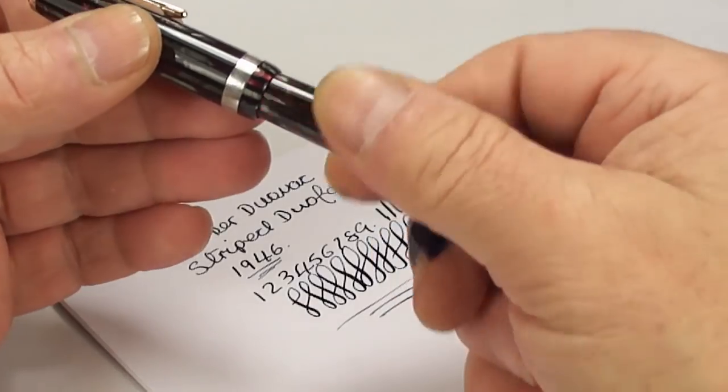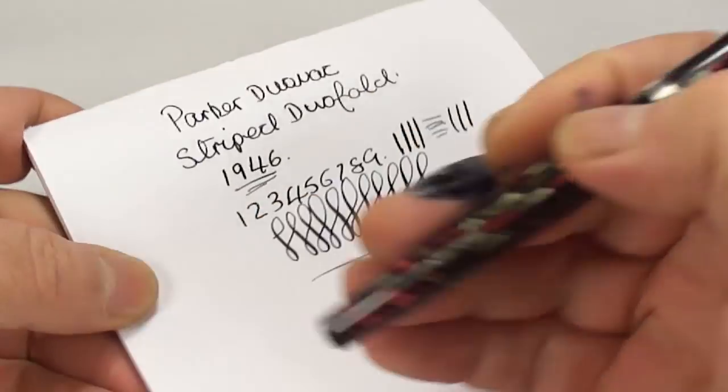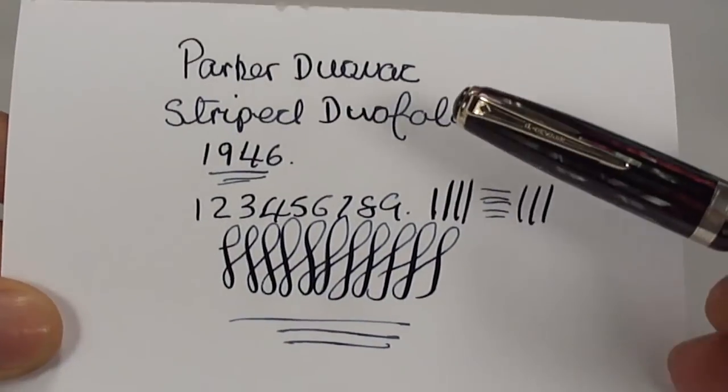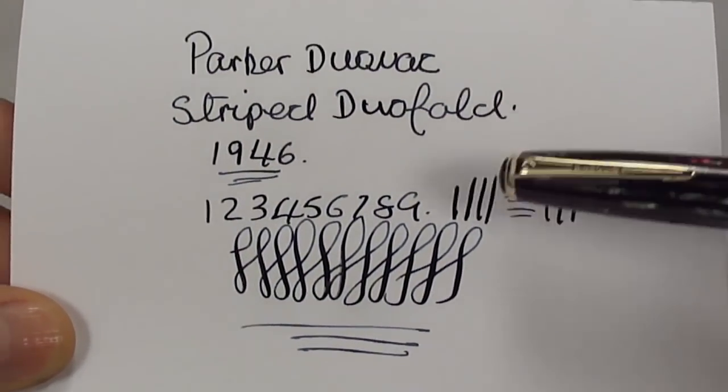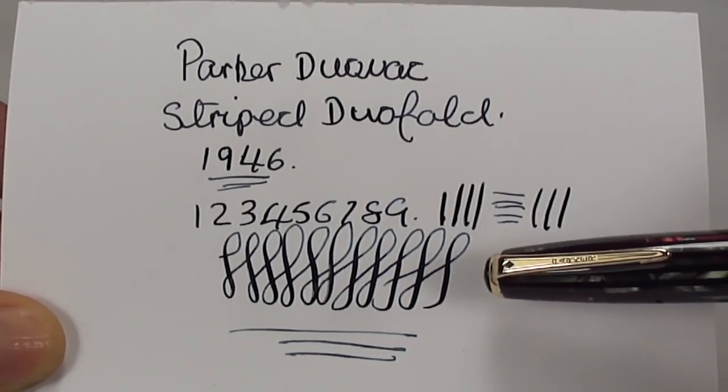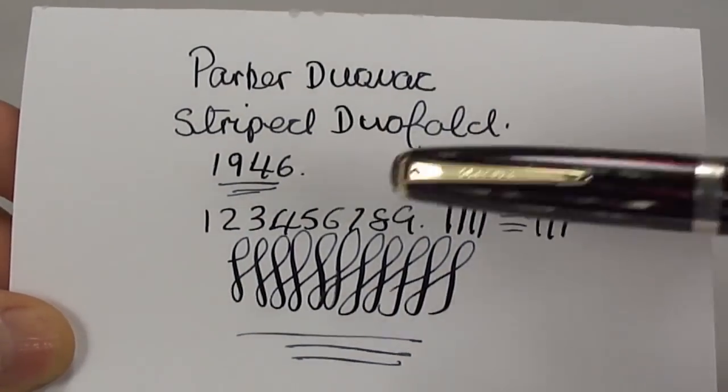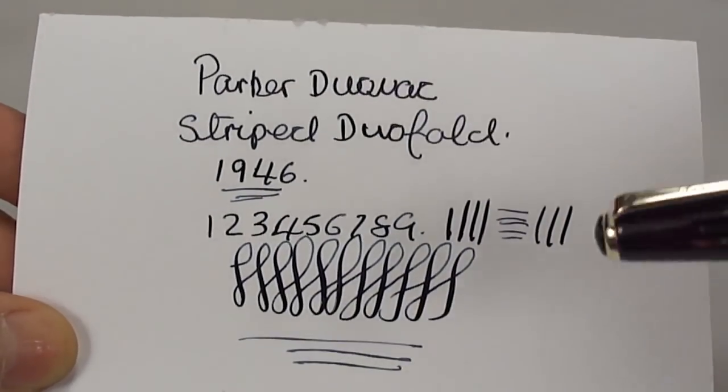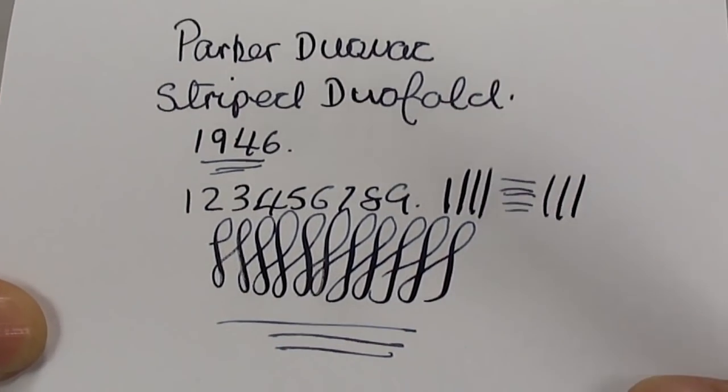So we'll leave it at that. What I'll do, I'll clean the nib because, as I say, this one is going back to the customer, so I'm sure he's going to be more than happy with it. But there you go, there's a writing sample. With a little bit of pressure on the downward stroke, we're getting a little bit of variation, but a lovely, lovely writer.